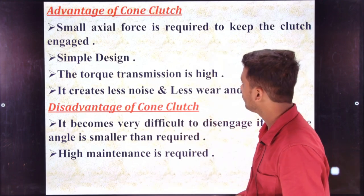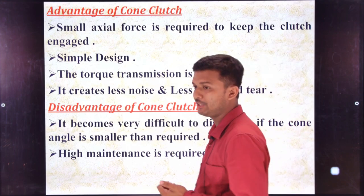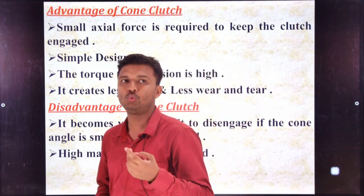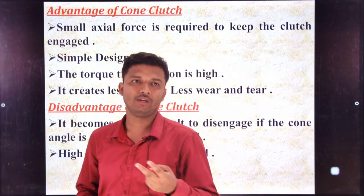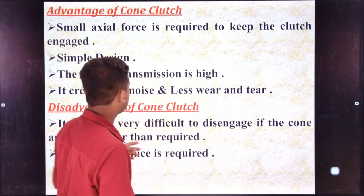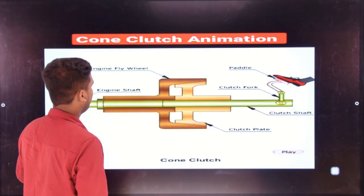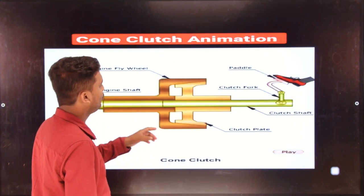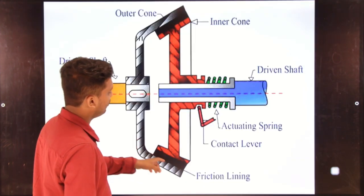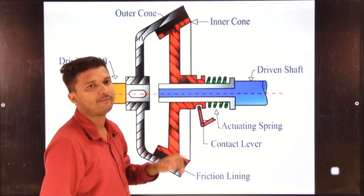The surface area of the cone is much more compared with the multi plate clutch. If the surface area is more, the torque transmission is more. It creates less noise and less wear and tear because the friction lining is only two sections — only two friction lining points.